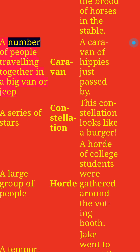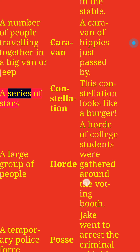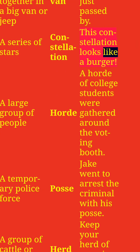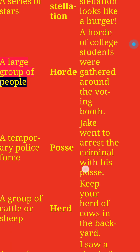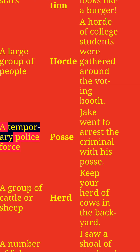A number of people traveling together in a big van or jeep: Caravan. A caravan of hippies just passed by. A series of stars: Constellation. This constellation looks like a burger. A large group of people: Horde. A horde of college students were gathered around the voting booth.